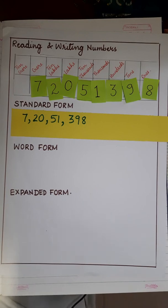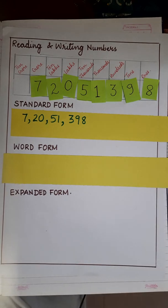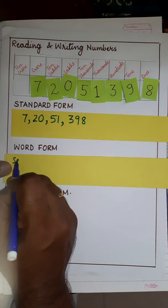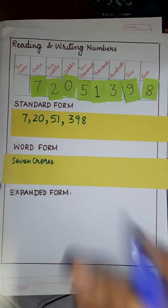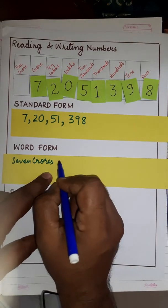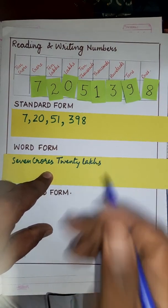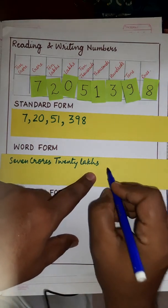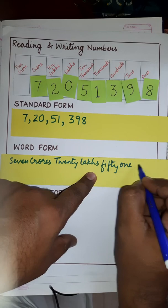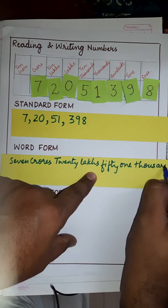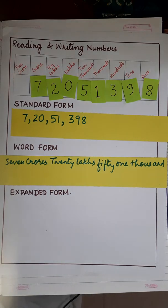Now, coming on to the word form, we will write it as seven crores, twenty lakhs, fifty-one thousand, three hundred ninety-eight.